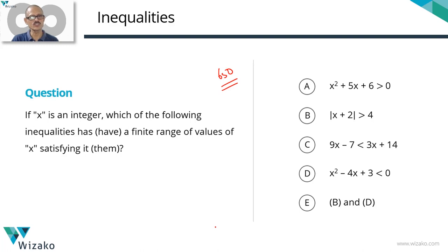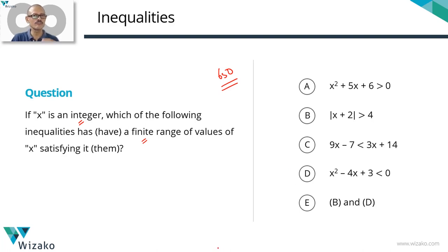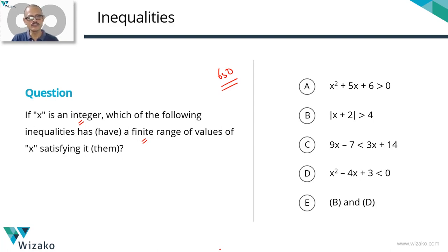Two key words in this question. The first is that x is an integer. The second is we need to determine for which of these four inequalities the range of values will be finite — not infinite. There could be 10 values, 8 values, or even 104 values satisfying them, but it should be a finite range. So for which inequality will the solution set be finite in number?